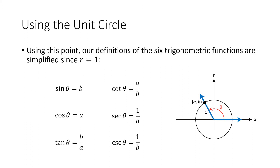The advantage of choosing this point with radius 1 is that it simplifies the formulas involved, because instead of having an r which is some mysterious number depending on our choice of point (a, b), now we know for sure that r is 1, and so the formulas are a lot simpler.